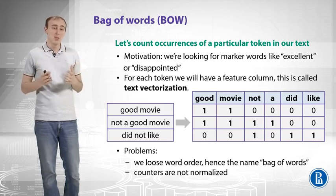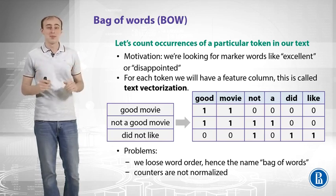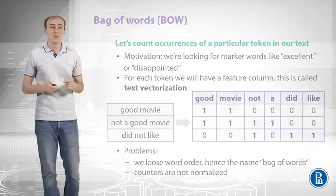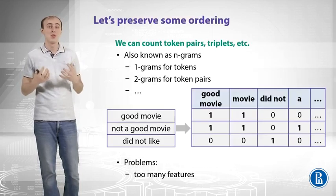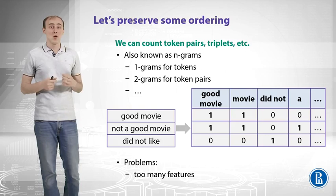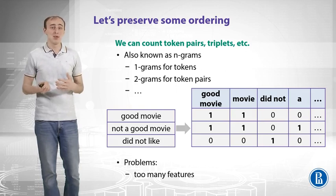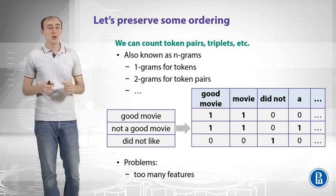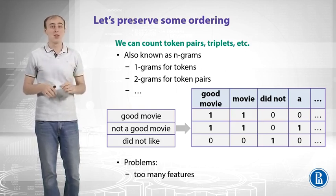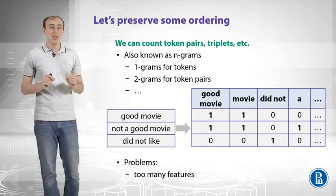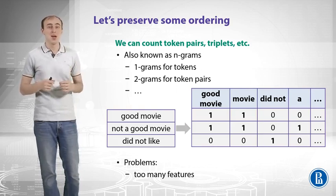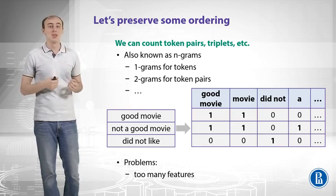A different problem is that counters are not normalized. Let's solve these two problems and start with preserving some ordering. You can easily come to the idea that you should look at token pairs, triplets, or different combinations. This approach is also called extracting n-grams. One-gram stands for tokens, two-gram stands for a token pair, and so forth.